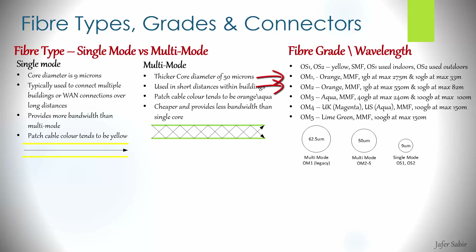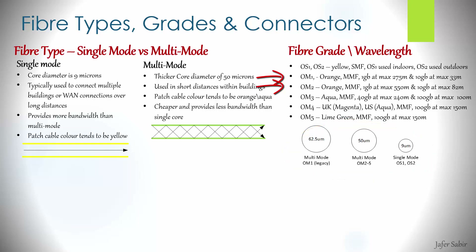The second line down is OM1 and OM2, which are usually orange in color and are multi-mode fibers. OM1 is legacy and very old, with a larger core size of 62.5 microns. OM2 through OM5 have slightly smaller cores of 50 microns. Single mode is much smaller than multi-mode altogether at 9 microns. OM1 supports up to 1 gig at 275 meters and 10 gig at 33 meters, whereas OM2 supports 1 gig at 550 meters and 10 gig at 82 meters.